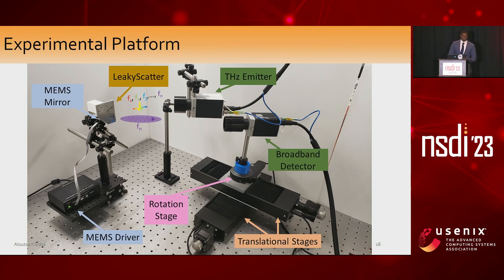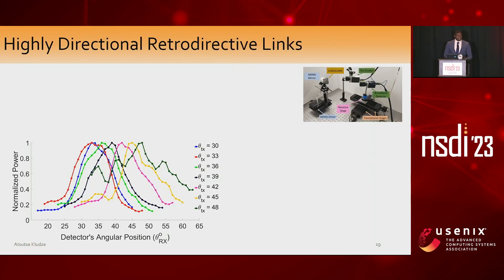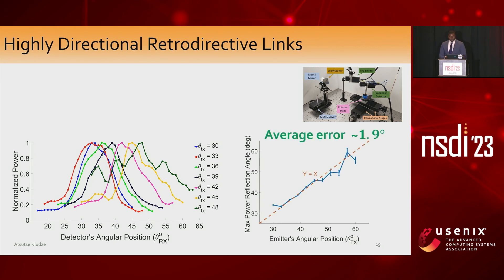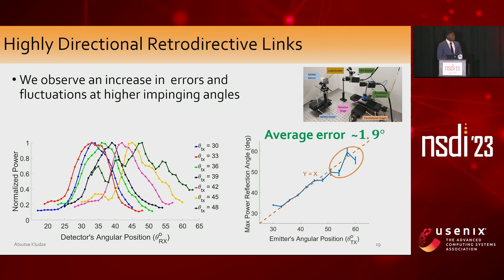I'm going to show a few of our results. Namely, we're able to form retroactive directive links with this architecture. Without any downside data modulation, we tried different incidence angles between the emitter and Leaky Scatter. We moved the detector on the 2D stage across different angles to measure the total radiation pattern. The frequency-angle coupling implies we'll see maximum power when the angle of emission equals the angle of arrival — meaning when the detector and emitter are placed in the same configuration. We can see this is confirmed in evaluation with an overall good agreement, with an average error of 1.9 degrees. Most errors occur at higher angles corresponding to lower frequencies, likely due to lower output power and lower SNR.